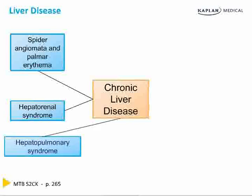Hepatopulmonary syndrome is when the liver stops clearing vasodilators such as nitric oxide. When these vasodilators build up, you get pulmonary edema, leading to shortness of breath and hypoxia.